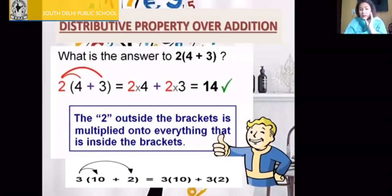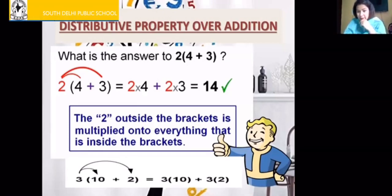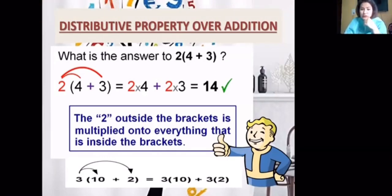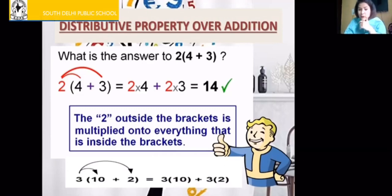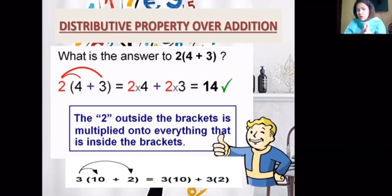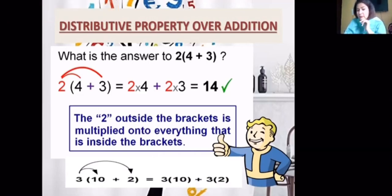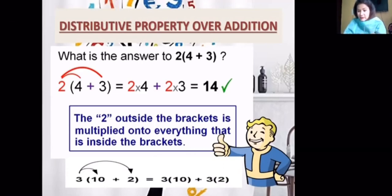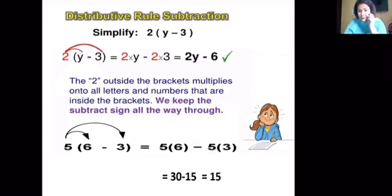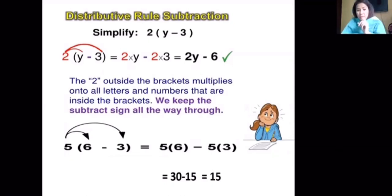Now let's check the distributive property over addition. For example: 2 multiplied by (4 plus 3) — we distribute the 2 outside the bracket with all integers inside. So 2 times 4 is 8, and 2 times 3 is 6, giving 8 plus 6 equals 14. Another example: 3 multiplied by (10 plus 2) — 3 is multiplied by 10 and also by 2. So distributive property holds over addition.